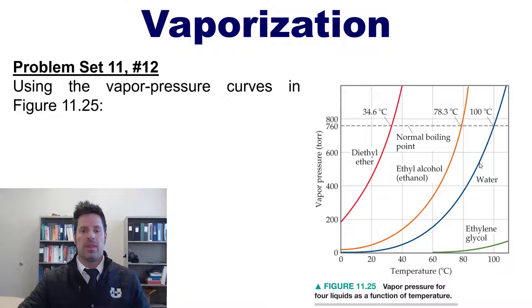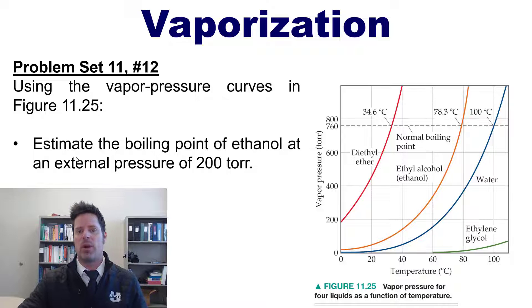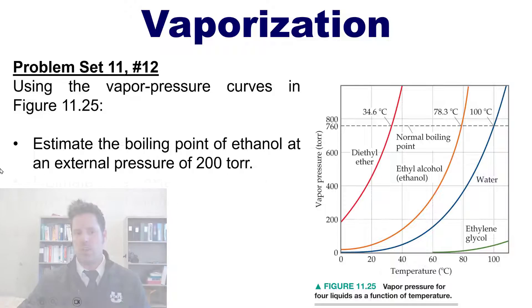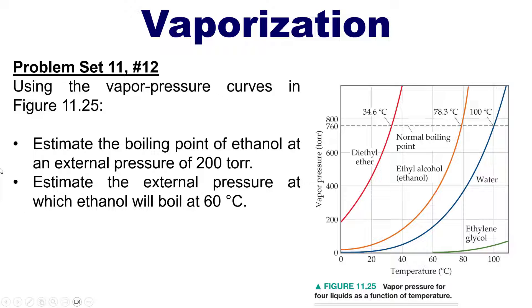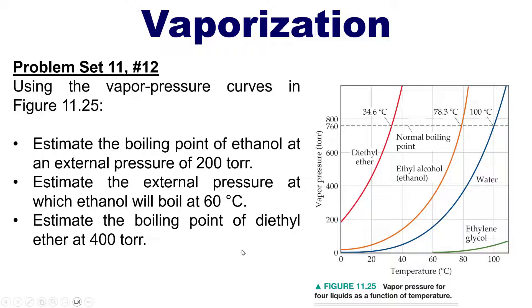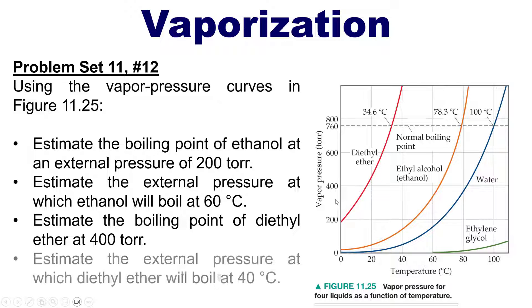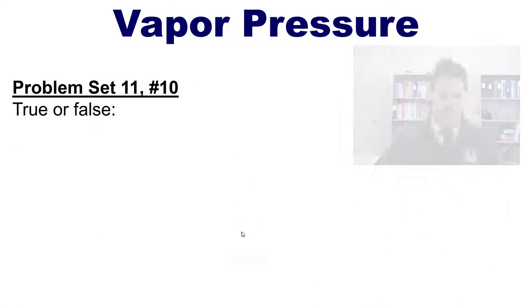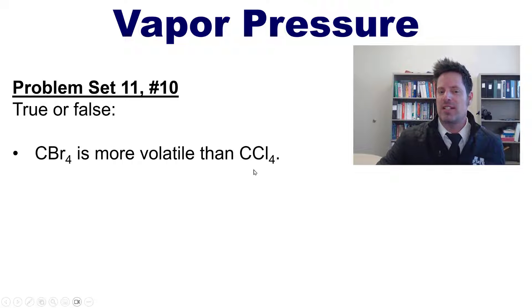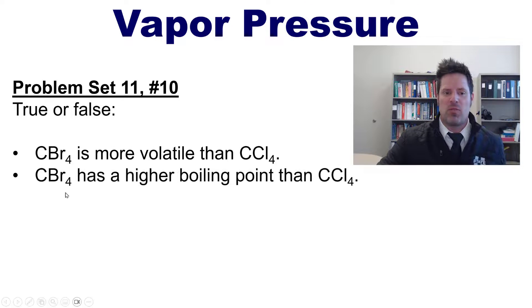Using this figure, I'd like you to estimate the boiling point of ethanol (the orange line) at an external pressure of 200 torr, and estimate the external pressure at which ethanol will boil at 60°C. Separately, estimate the boiling point of diethyl ether at 400 torr, as well as the external pressure at which diethyl ether will boil at 40°C.